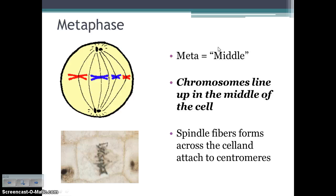Next comes metaphase. Meta means middle, so the chromosomes are attached to spindle fibers, and the spindle fibers line them up along the middle of the cell. This is what you saw in the onion root tip lab.